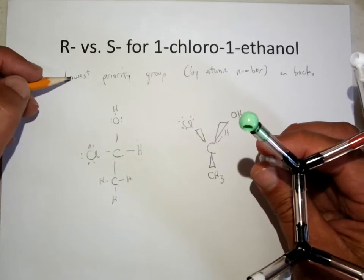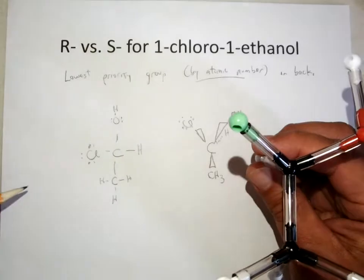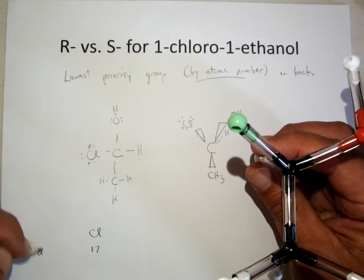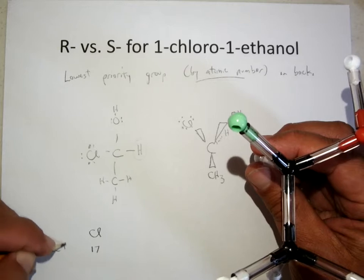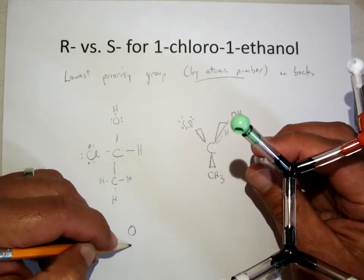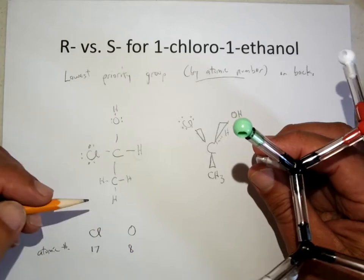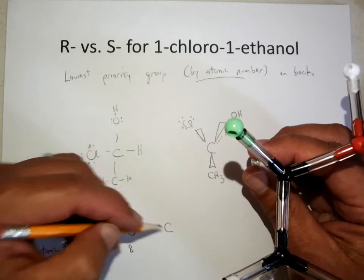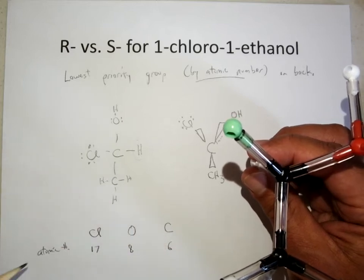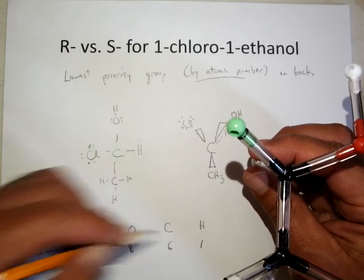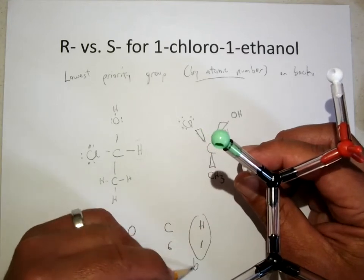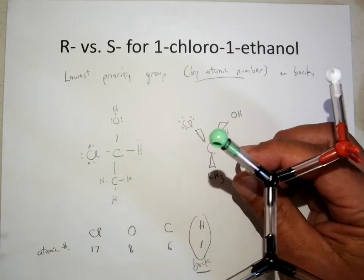Now I said the priority group is by atomic number. So the priority is chlorine is atomic number 17. The oxygen is atomic number 8. The carbon is atomic number 6. And the hydrogen is atomic number 1. That's why I put the lowest priority group in back. The hydrogen is always the lowest atomic number.